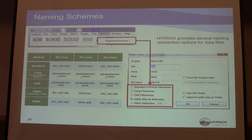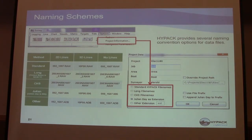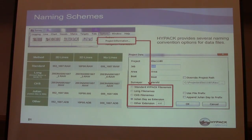Naming schemes: HiPAC provides several naming convention options for data files — standard HiPAC file names, long file names, CHS, Julian, and day-as-extension. This is all about the name of your file. Maybe you want to be able to reference them by date. There are different reasons why you want to name them differently, and there are different options available.